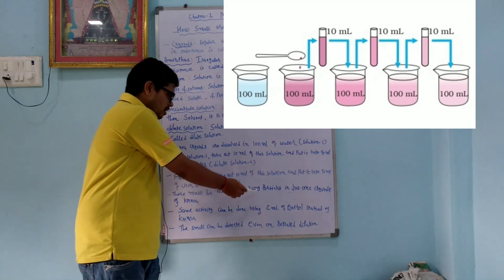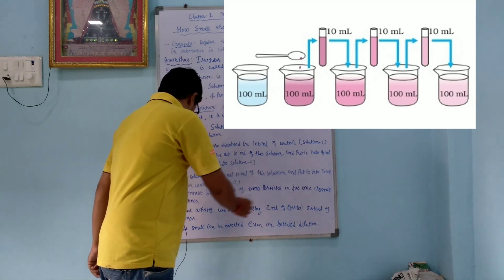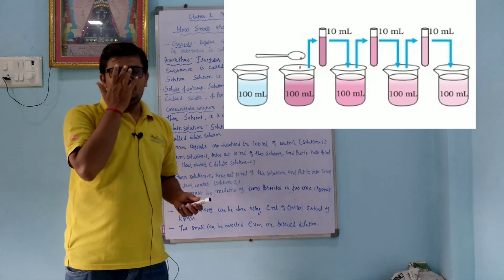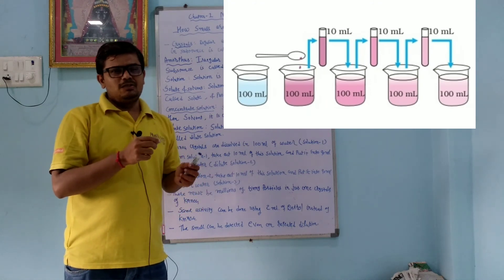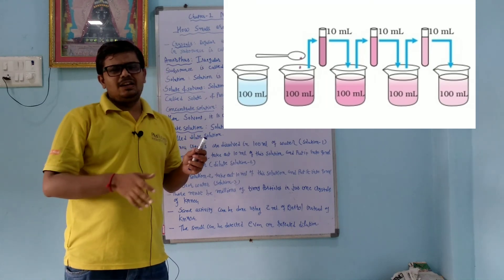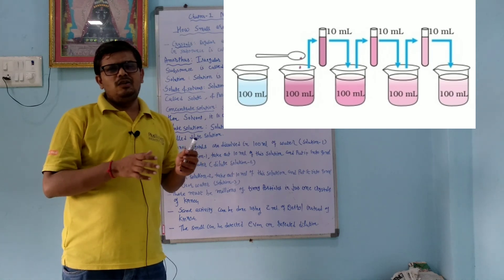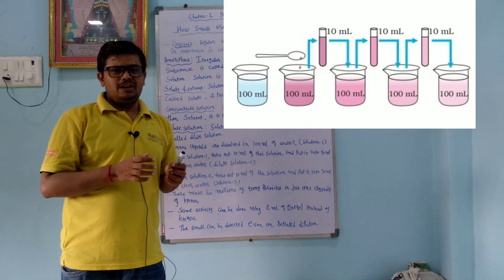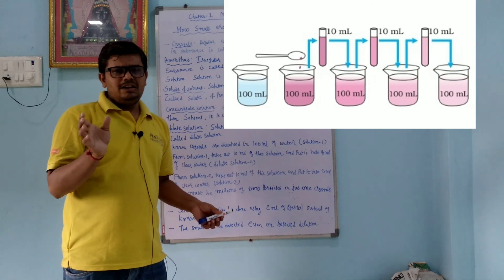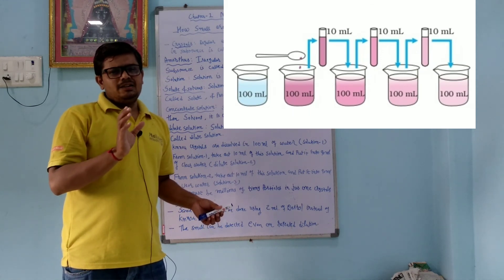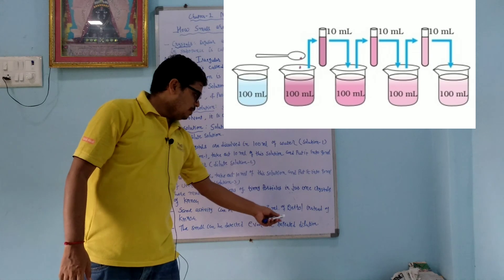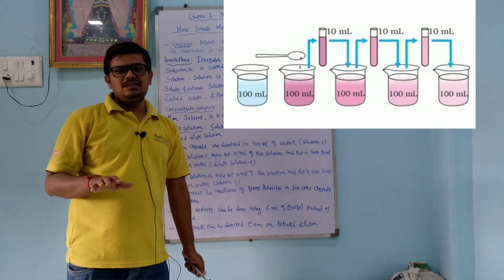This shows there must be millions of tiny particles in just one crystal of KMnO₄. The same activity can be done using 2 ml of Dattol added to 98 ml of water. Through repeated dilutions, the smell of Dattol can still be detected — Solution 1 has the most intense smell, decreasing through Solutions 2 and 3 as dilution increases.